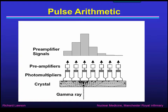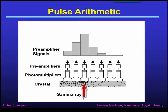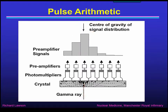The amount of light collected by each photomultiplier depends on how close it is to the scintillation point, so the photomultiplier at its closest produces the biggest amount of light. We can use that as a rough idea of where the gamma-ray interacted, but we can do better by looking at the signals on either side. In this case the gamma-ray interacted slightly to the left of centre, so we can use the centre of gravity of the signal distribution as our best estimate of the position where the gamma-ray interacted.